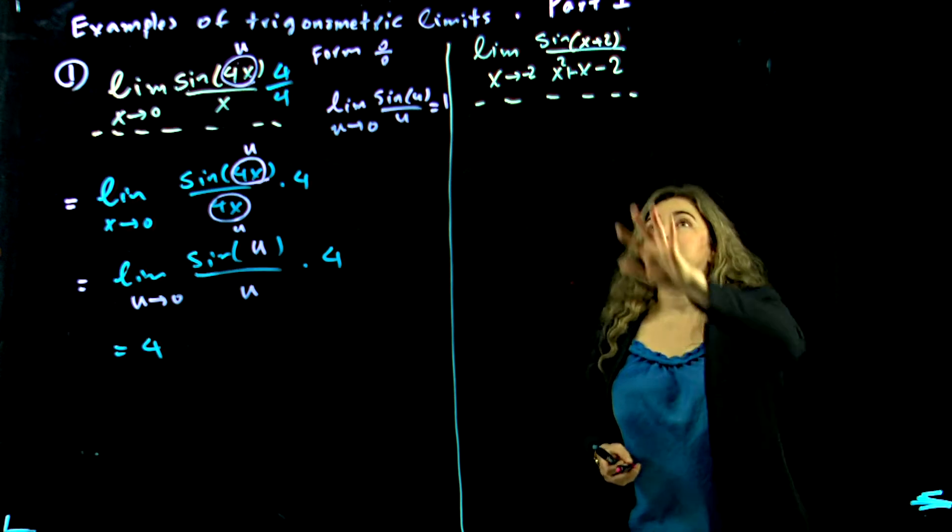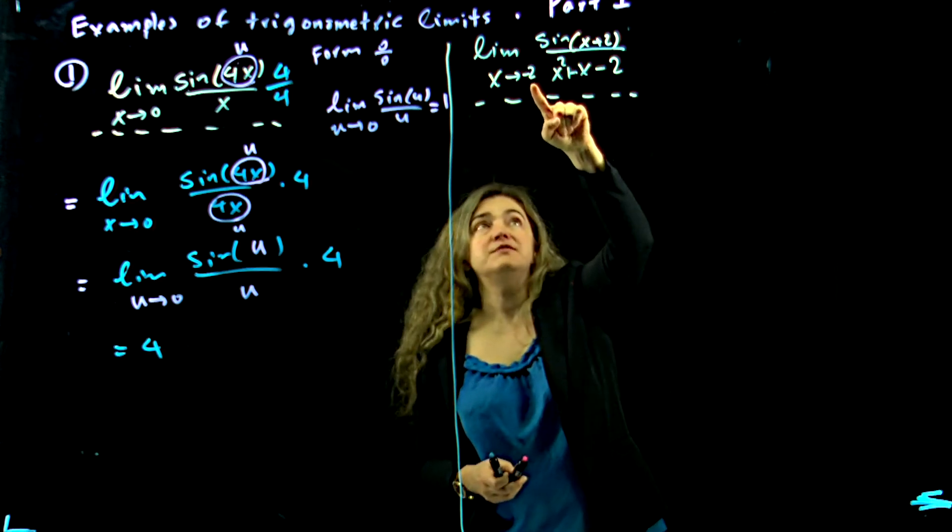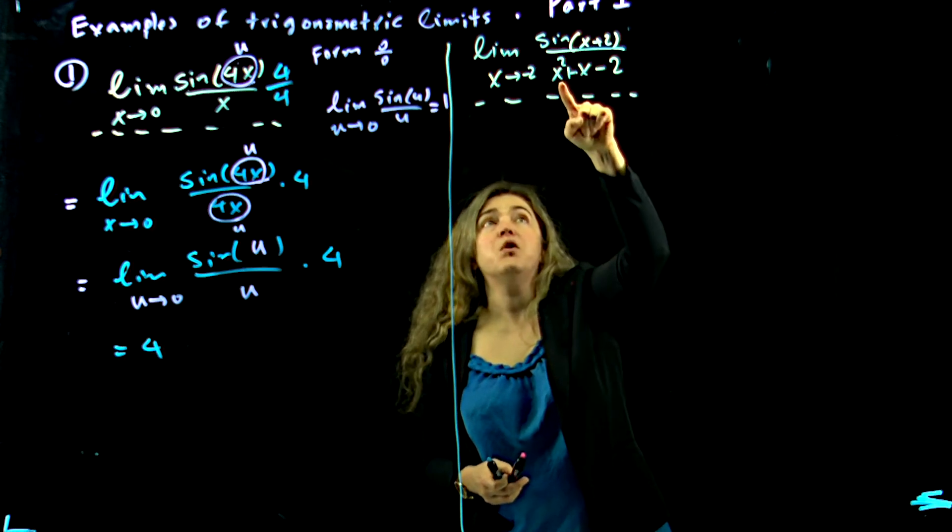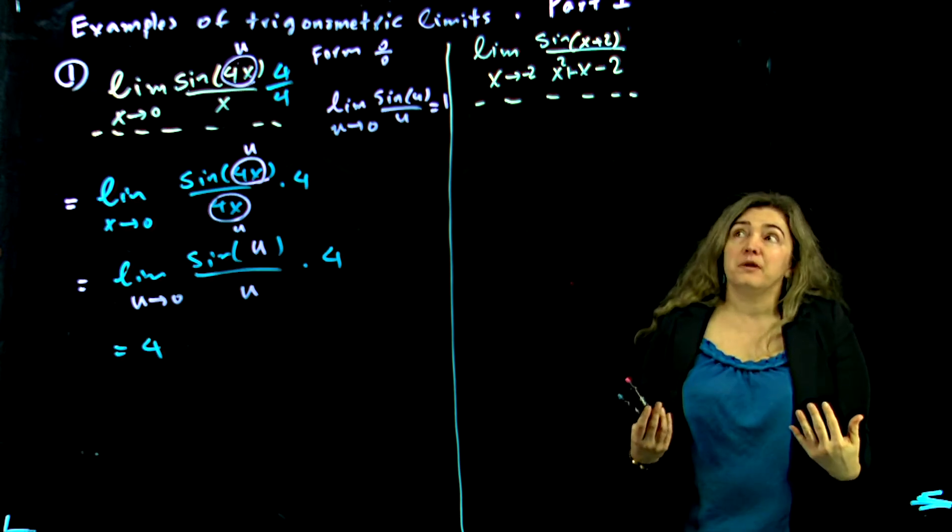Now let's go to the second example. Limit as x approaches negative 2 of sine of x plus 2 over x squared plus x minus 2. How do I manage this? Let's try to plug in.